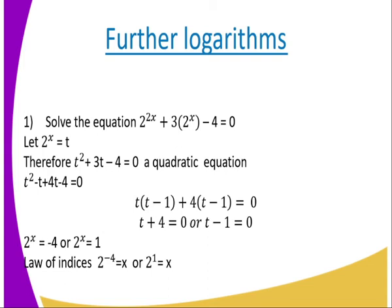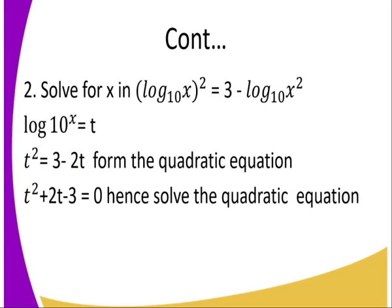Solving gives t equals negative 4 or t equals 1. Since 2 raised to power x equals t: 2 raised to power x equals 1 gives x equals 0. The case 2 raised to power x equals negative 4 has no real solution. There is also an assignment equation: t squared equals 3 minus 2t — solve the quadratic equation.